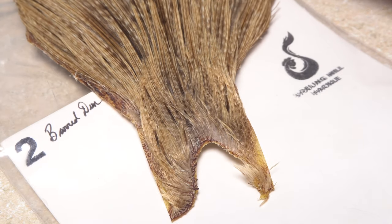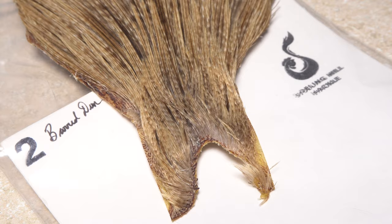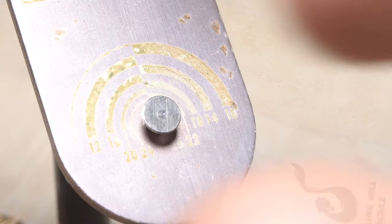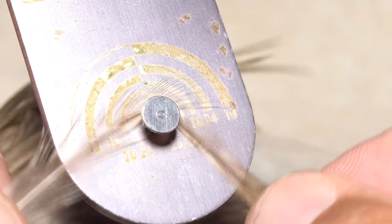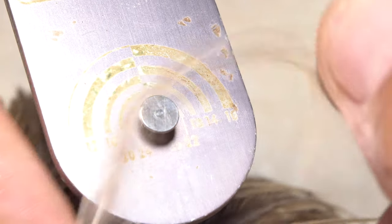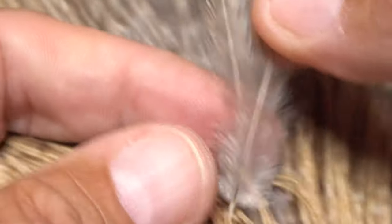For hackle, you can go with a basic medium dun color, but I really like the natural look of this barred dun, which has shades of brown and tan mixed in as well. Measure to find a feather with fibers of the correct length, here size 10. Once you're sure of the measurement, pluck the feather free from the skin.